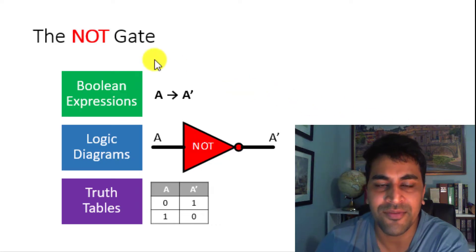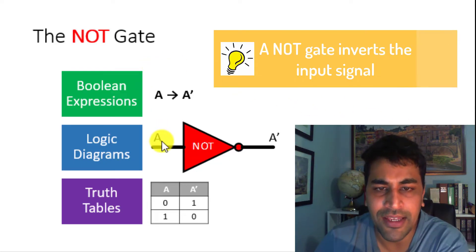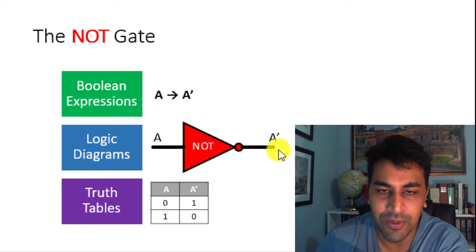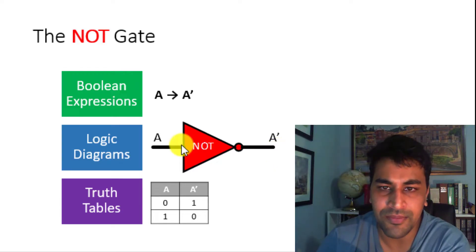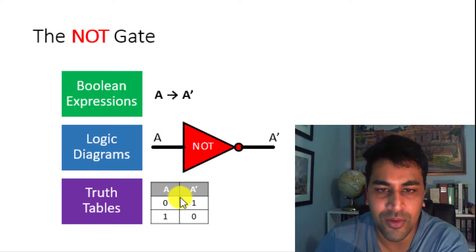The NOT gate inverts the input signal. That is, if A can take the value of 0 and 1, and if A is 0, then A' would be 1. If A is 1, then A' would be 0. The truth table shows all possible input and output combinations. If A is 0, A' would be 1. And if A is 1, A' would be 0.